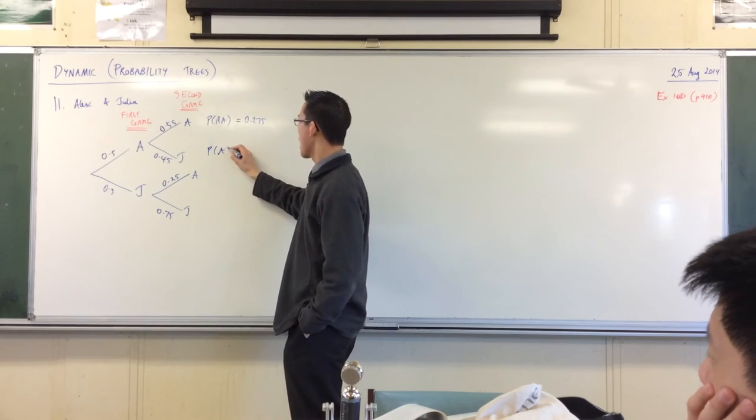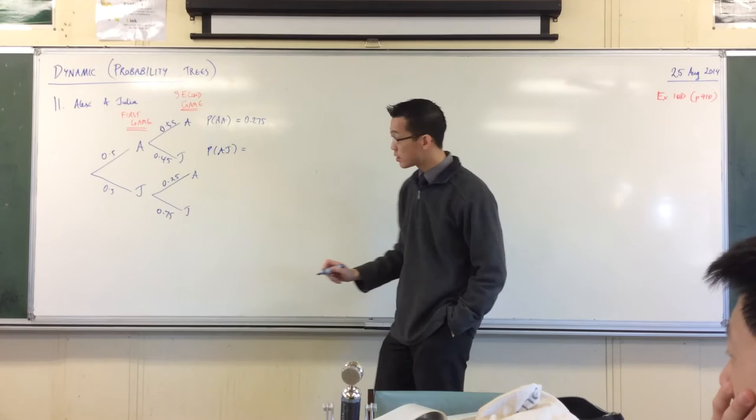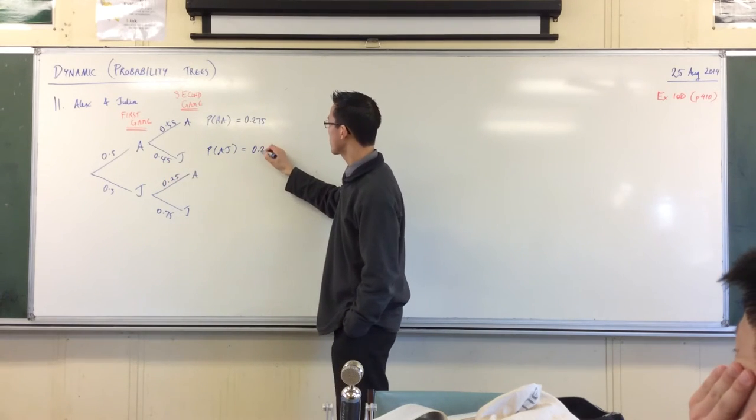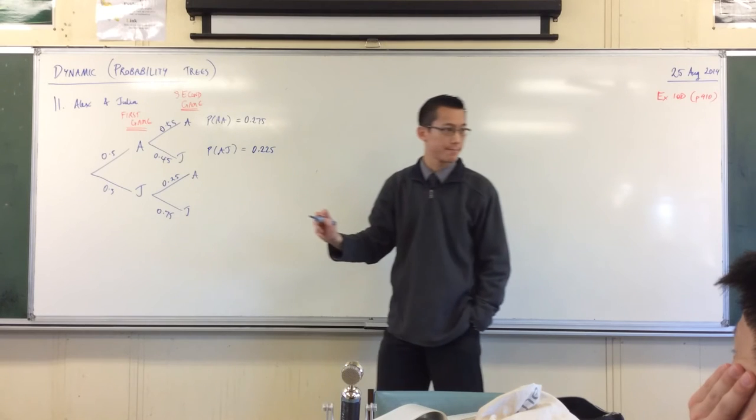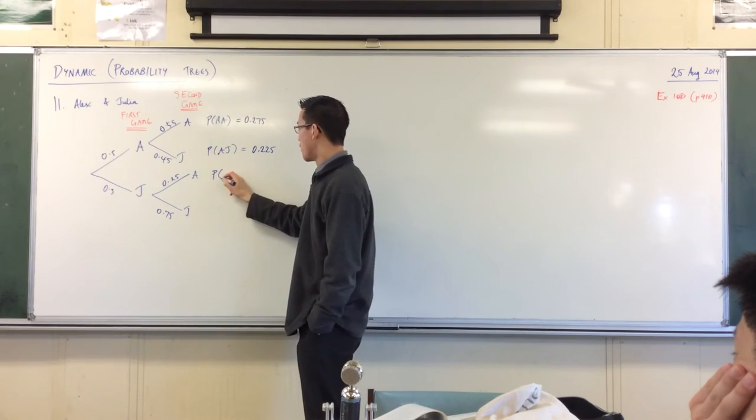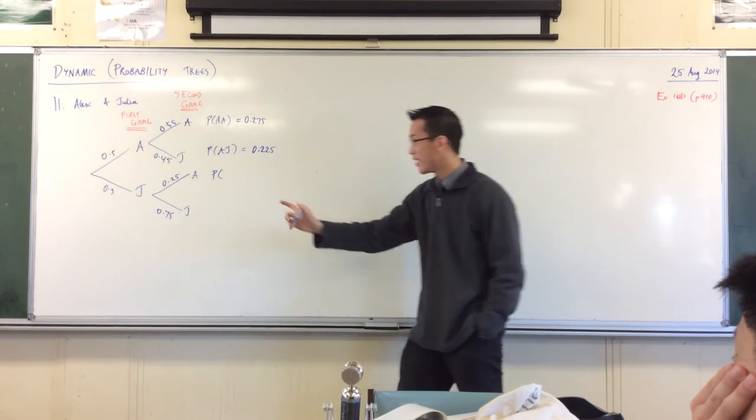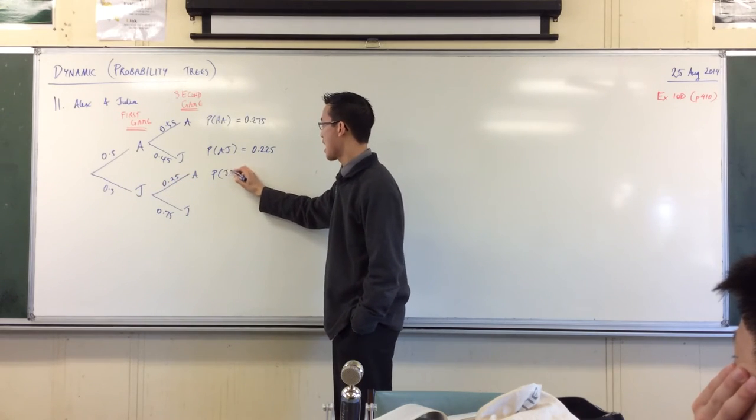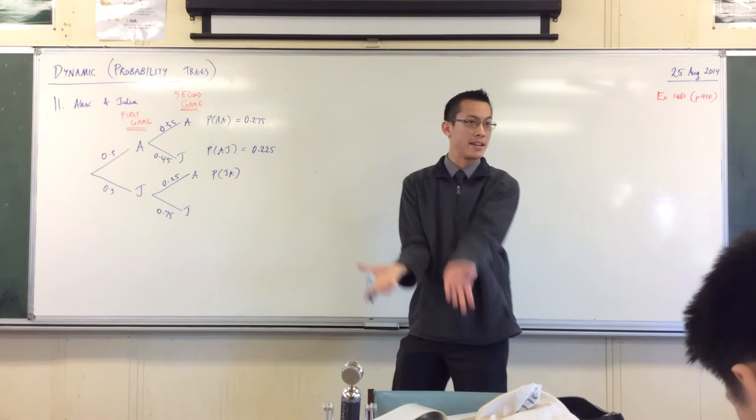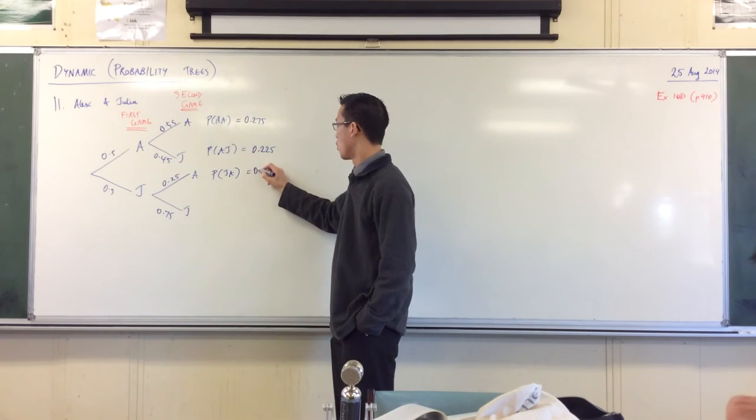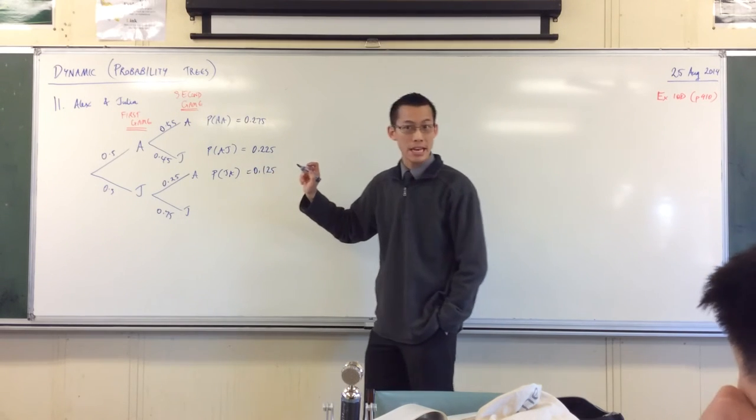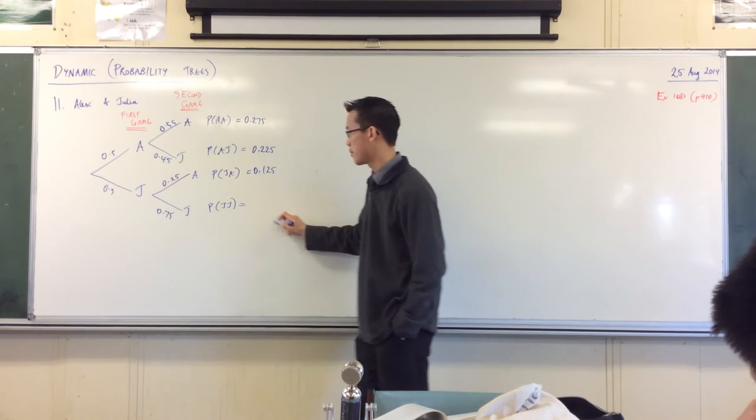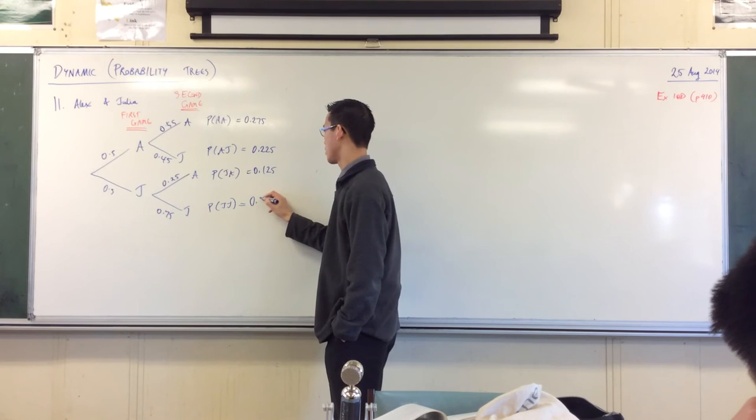The probability of Alex winning the first game but then losing will be, that looks like 0.225. The probability of Alex coming from behind and winning is going to be 0.5 times 0.25. JA, by the way, automatic is here clearly. That's 0.125. And then the probability of Julia getting a clean sweep, that'll be 0.375.